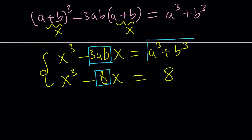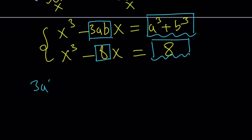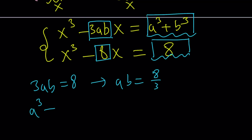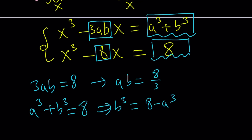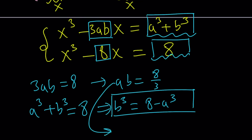This one has a³ + b³, and this one has 8. So a one-to-one comparison gives us 3ab = 8, which implies ab = 8/3. And the second one gives us a³ + b³ = 8. From here, you can isolate b³ and write it as 8 - a³. We're going to use this, but before we can use this, we have to cube both sides here.